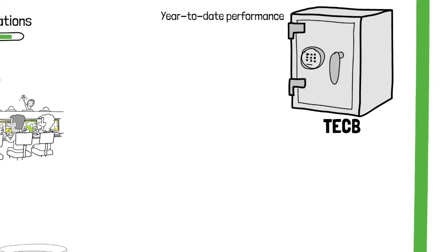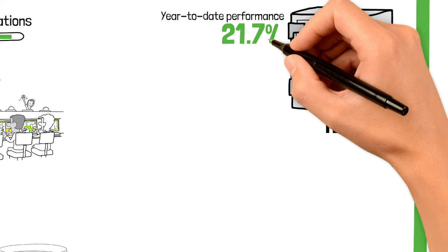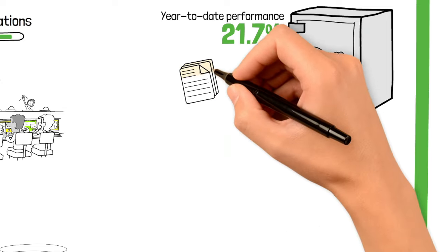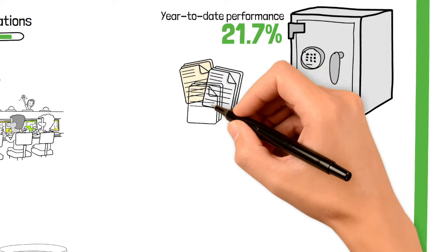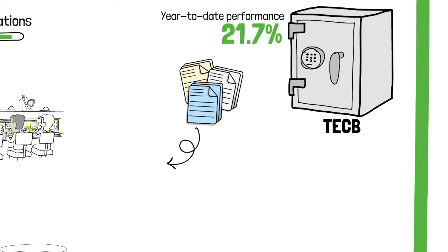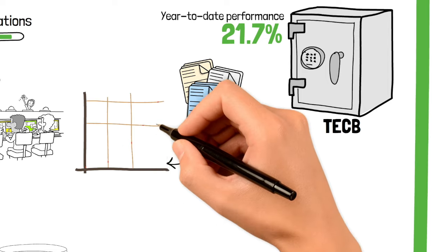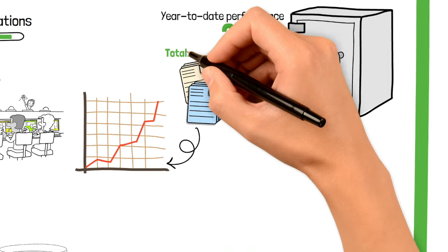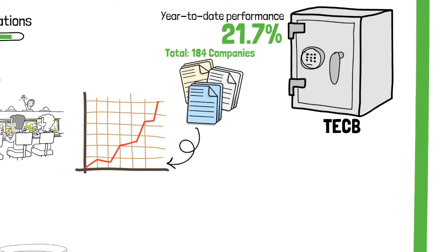TECB has shown strong performance with a year-to-date return of 21.7 percent. This indicates its ability to capture growth in various tech sectors effectively. The ETF holds 184 companies, offering a balanced mix of large, established firms and smaller innovative players.